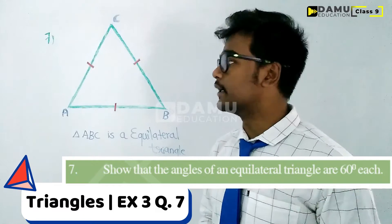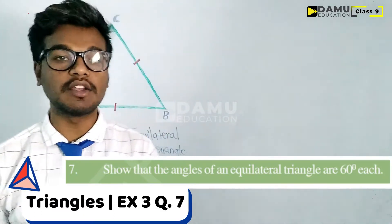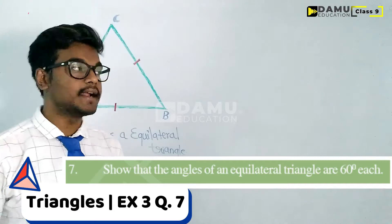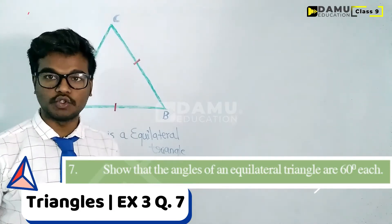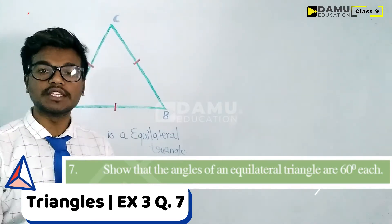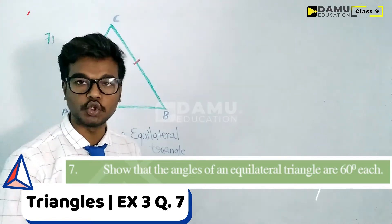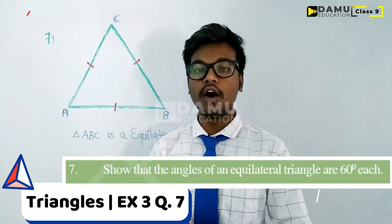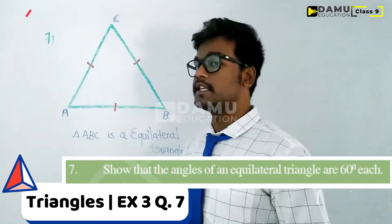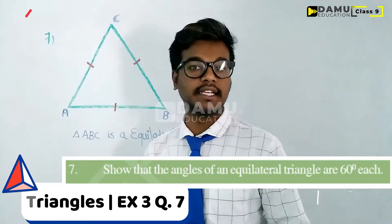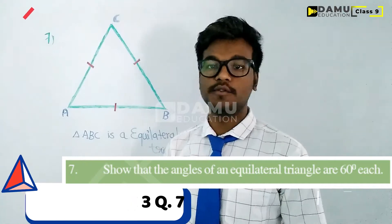So what they have given here is one triangle ABC, that is an equilateral triangle. They are telling us about this equilateral triangle, and what we have to show here is that each and every angle in this triangle is 60 degrees. How to show it is 60 degrees? We need to think of it like an isosceles triangle, and based on that we have to move on.